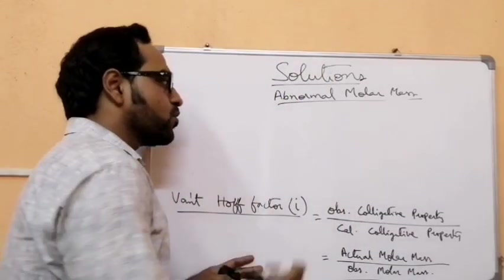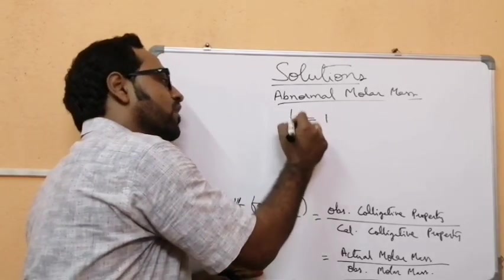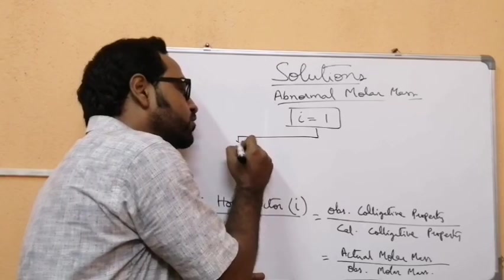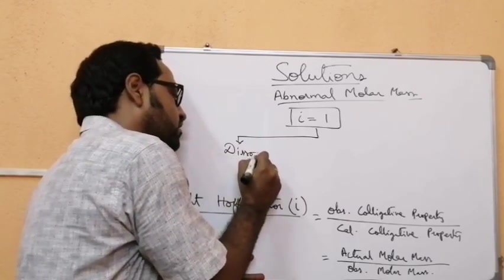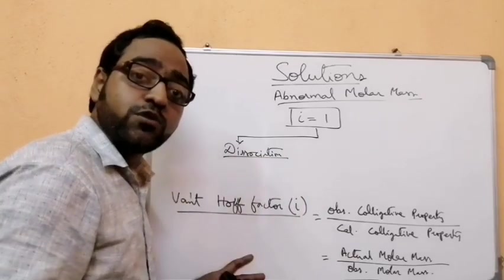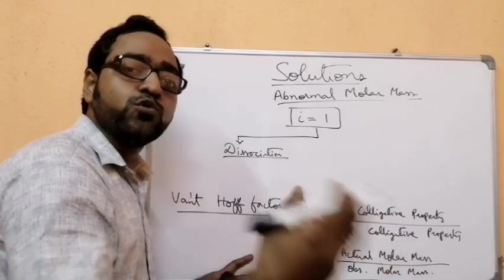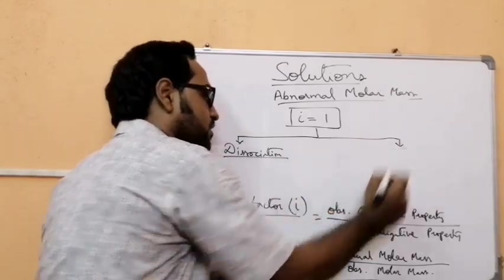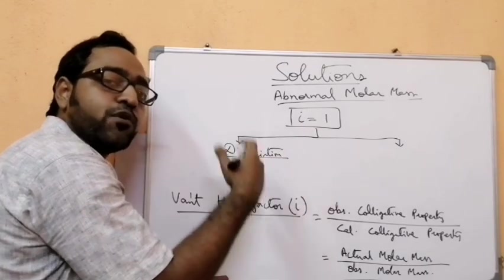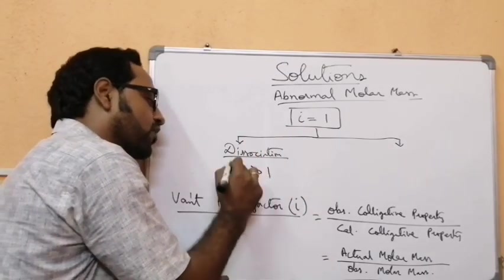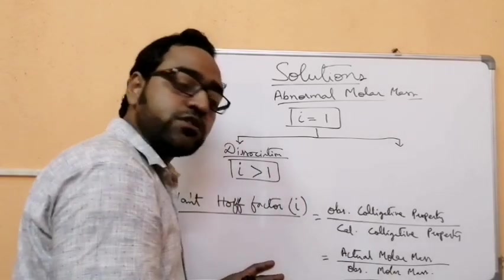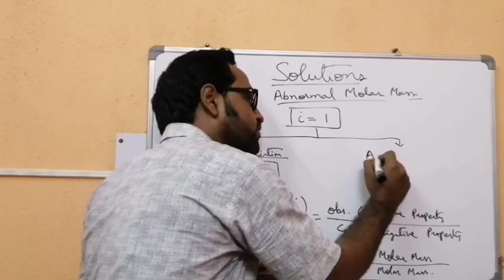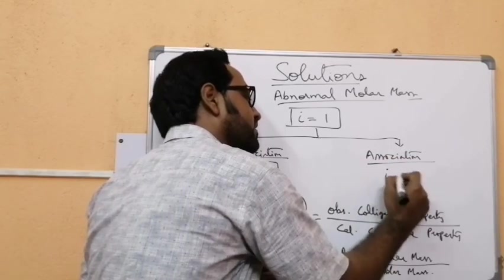If the solute does not undergo dissociation or association, i = 1, meaning one mole added gives one mole in solution. If the solute undergoes dissociation, one mole breaks into two, three, or four moles depending on the formula, so the number of particles increases and i > 1. If the solute undergoes association, one mole gives half mole or one-third mole, so the number of particles decreases and i < 1.